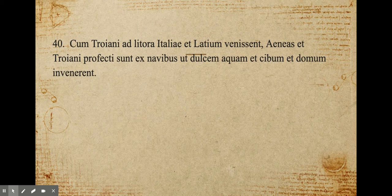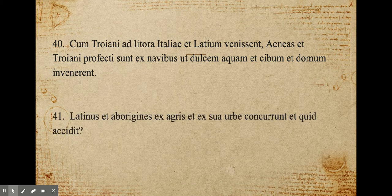Cum Troiani ad litora Italiae et Latinum venissent, Aeneas et Troiani profecti sunt ex navibus et dulcem aquam et cibum et domum invenirunt. When the Trojans had come to the shores of Italy and Latinum, Aeneas and the Trojans set out from their ships in order to find — invenirunt is a purpose clause — sweet water and food and a home. Latinus and the natives left from their fields and from their city, and what happened?